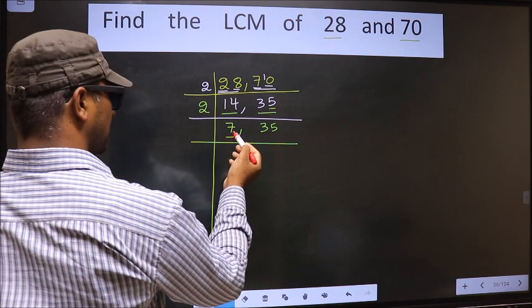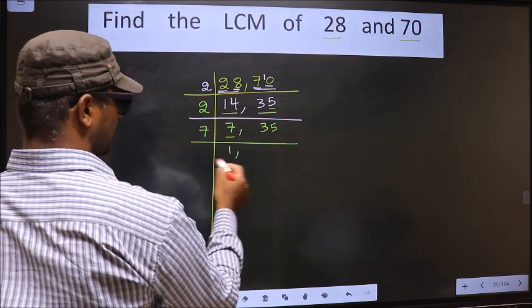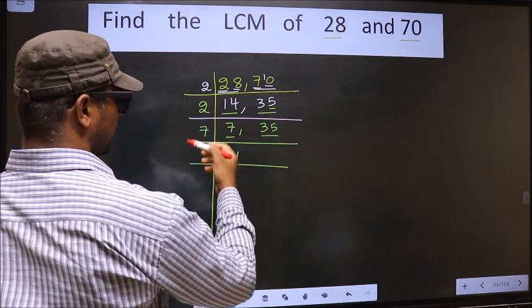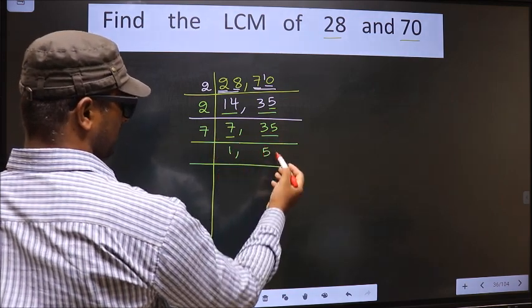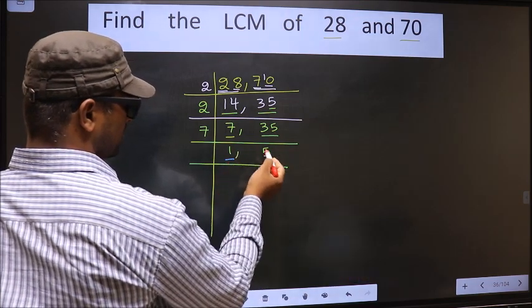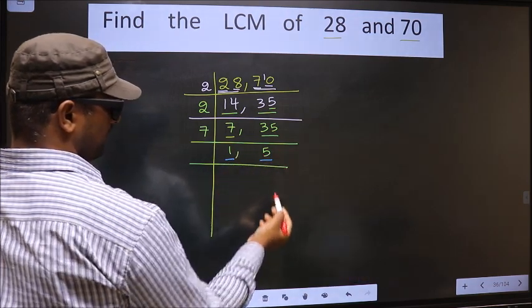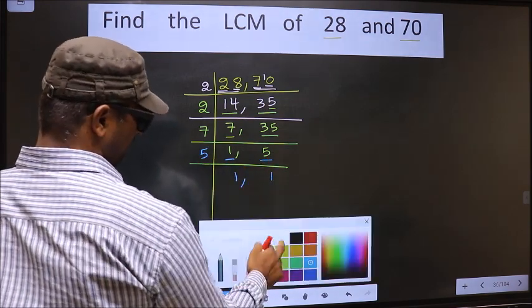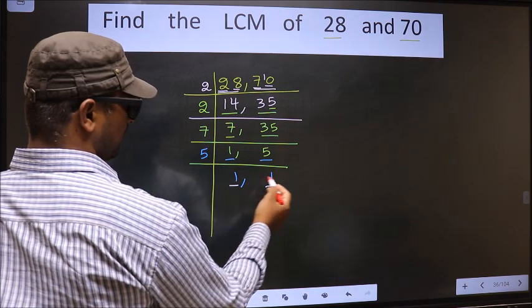Now here we have 7. 7 is a prime number, so 7 once 7. The other number 35. When do we get 35 in 7 table? 7, 5 is 35. We got 5. We got 1 here, so focus on the other number, that is 5. 5 is a prime number, so 5 once 5. We got 1 in both the places.